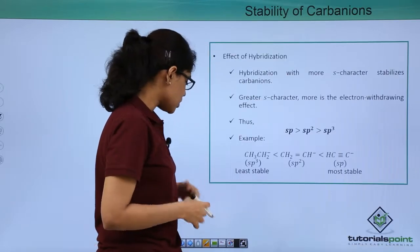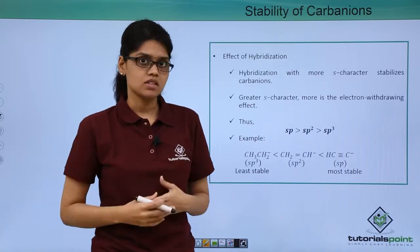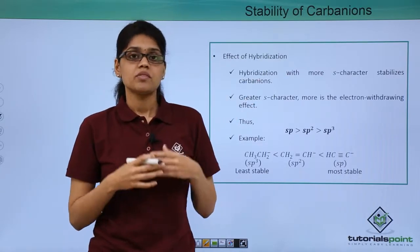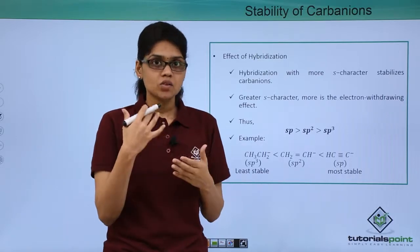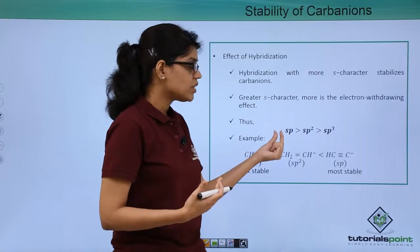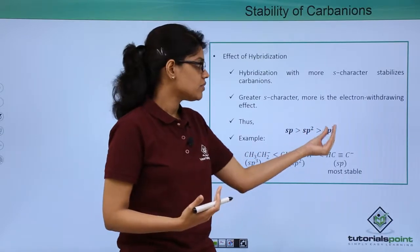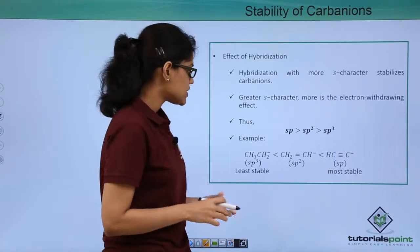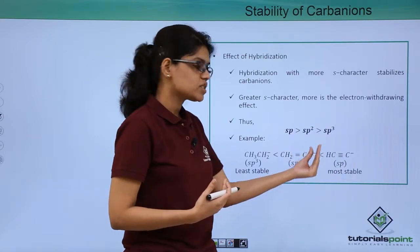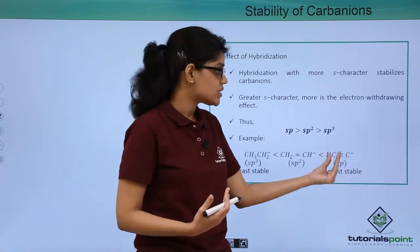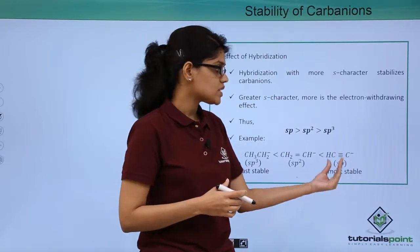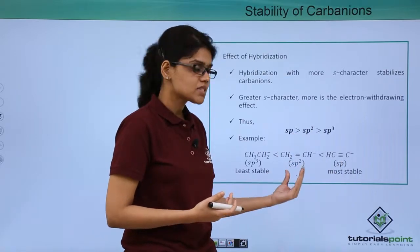Another factor contributing to carbanion stability is hybridization. Greater S character essentially stabilizes a carbanion. More S character means greater electronegativity: SP has 50% S character, SP2 has 33%, and SP3 has 25%. Therefore SP hybridized carbanions have the greatest electron-withdrawing ability. For example, CH3CH2⁻ is SP3 hybridized, CH2=CH⁻ is SP2 hybridized, and SP hybridization offers maximum stability of carbanions because it has the maximum electron-withdrawing ability — SP > SP2 > SP3.